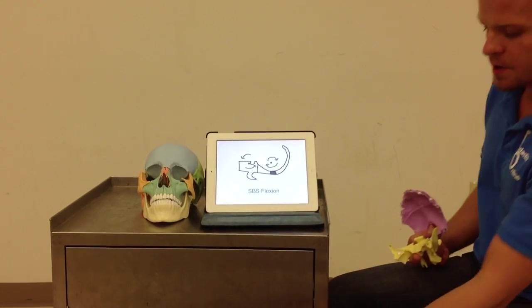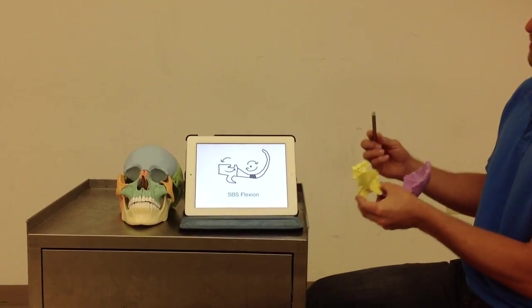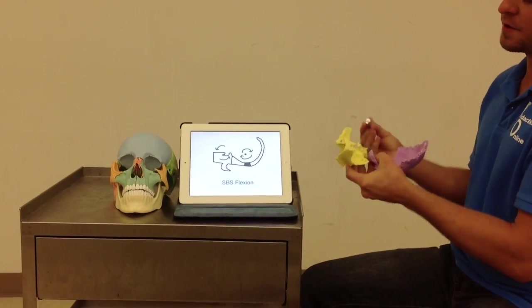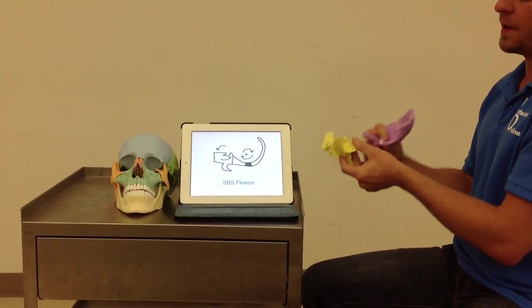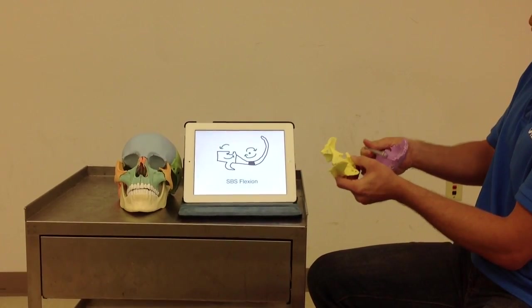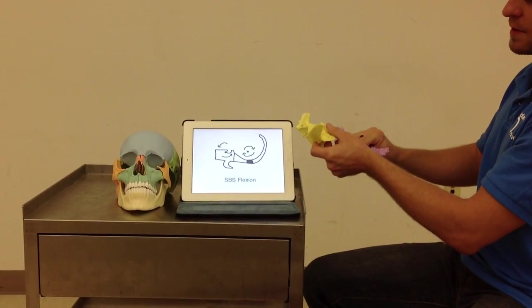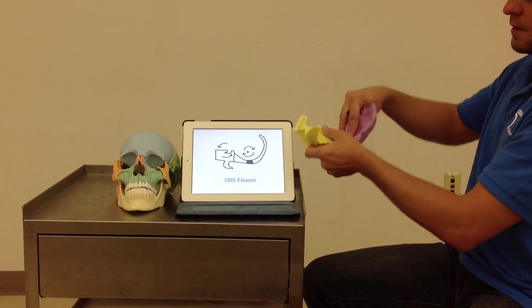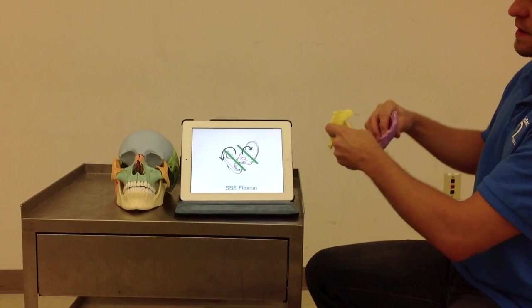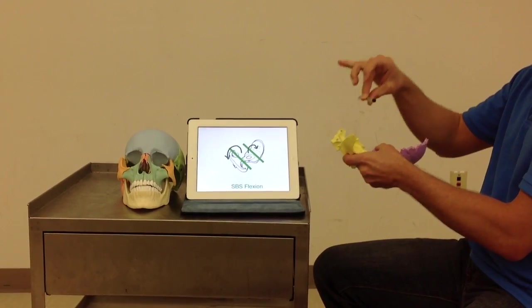We already talked about SBS flexion. We're going to talk about it again in a little bit more depth. Keep in mind that there are two transverse axes that are going to be guiding the motion of the sphenoid and the occiput in their basic postural motions. You're going to have a pole here and another axis pole here. As the sphenoid tips forward, the occiput will tip backwards and that's going to provide SBS flexion. Also depicted in this diagram, you can see they're both tipping in opposite directions around two parallel transverse axes.